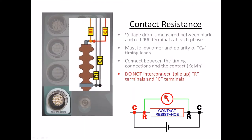This corresponds to the typical connections in a milliohmmeter — what we call the four-wire or four-terminal connection, also known as the Kelvin connection. In the Kelvin connection, you have a current injector generating current across the conductor, and then voltage drop terminals placed on both sides of the contact whose resistance you want to measure. You always place the voltage drop measuring terminals as close as possible to the measured spot, and the current injection spots can be placed wherever you wish.